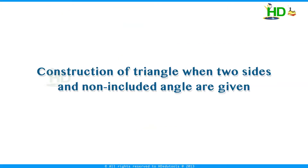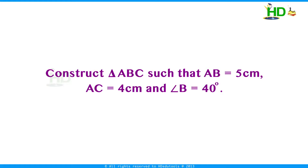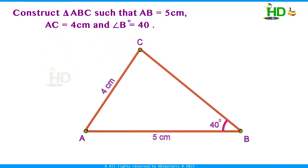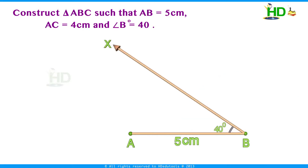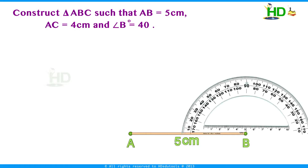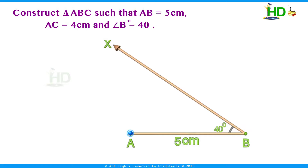Now we take another method: construction of a triangle when two sides and the non-included angle are given. We take this example: construct triangle ABC such that AB = 5 cm, AC = 4 cm, and angle B = 40 degrees. Draw a line segment AB of length 5 cm. Taking B as the center, draw ray BX making an angle of 40 degrees at B using a protractor. Now with A as the center and radius 4 cm, draw an arc to cut ray BX. Mark the intersecting point as C and join AC. This is the required triangle ABC.